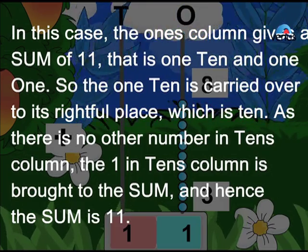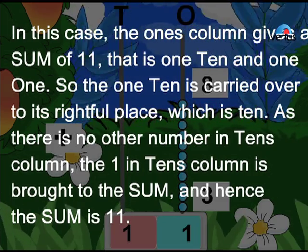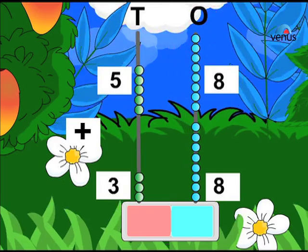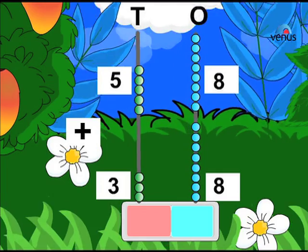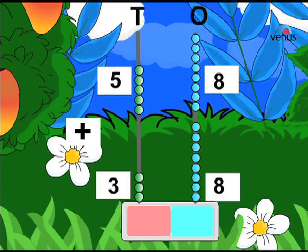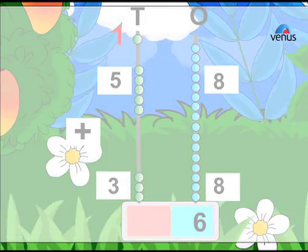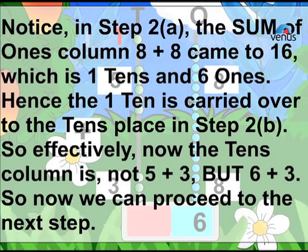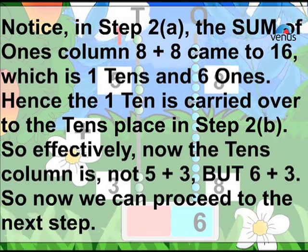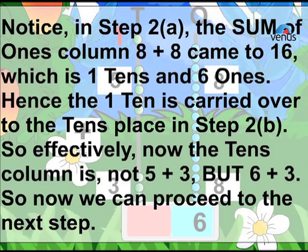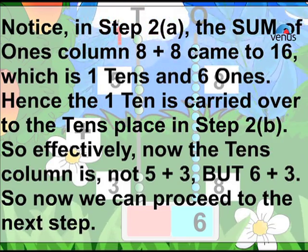As there is no other number in tens column, the 1 in tens column is brought to the sum, and hence the sum is 11. Example 2: Add 58 plus 38. Step 1, step 2a, step 2b. Notice in step 2a the sum of ones column 8 plus 8 came to 16, which is 1 ten and 6 ones. Hence the 1 ten is carried over to the tens place in step 2b.